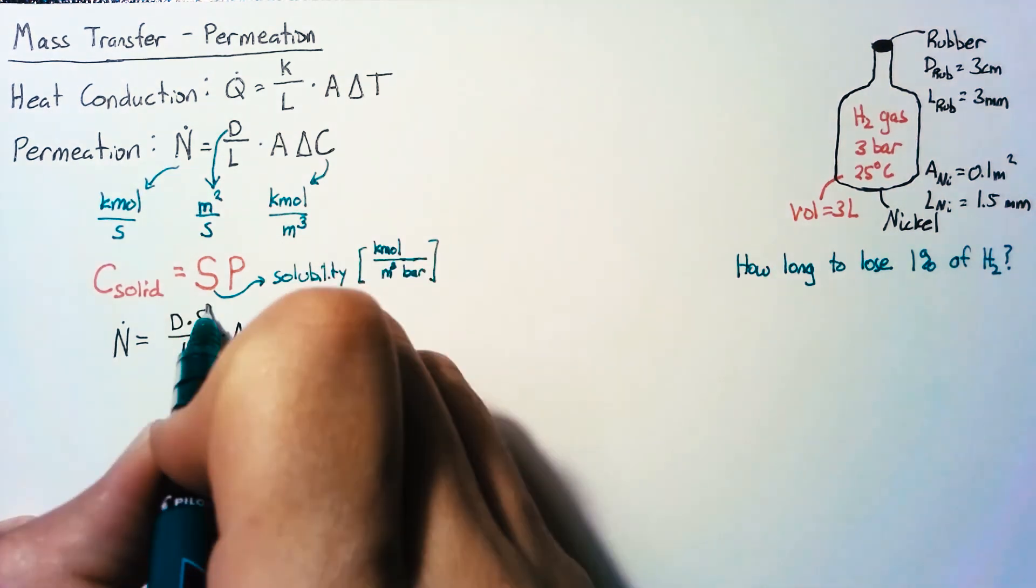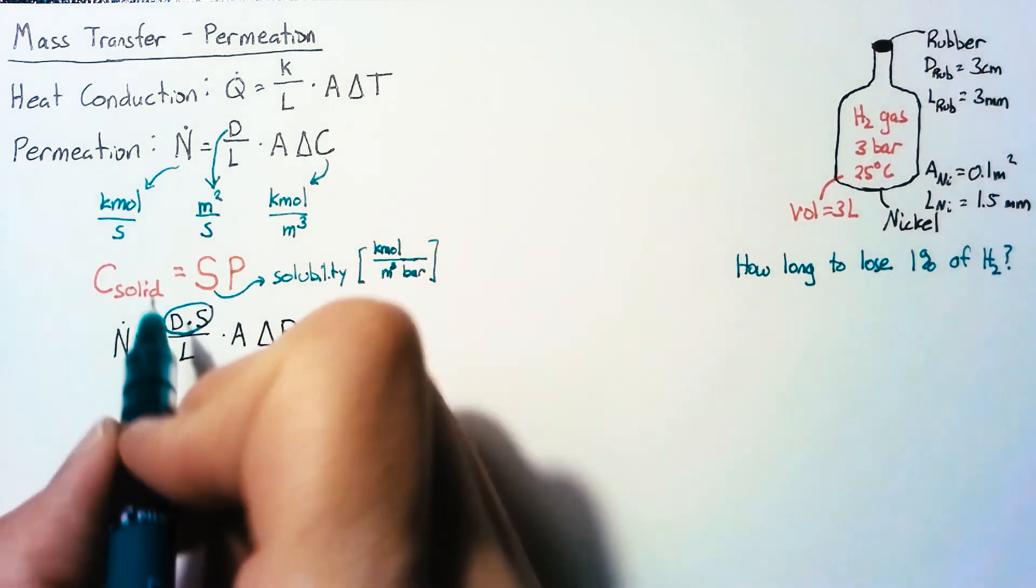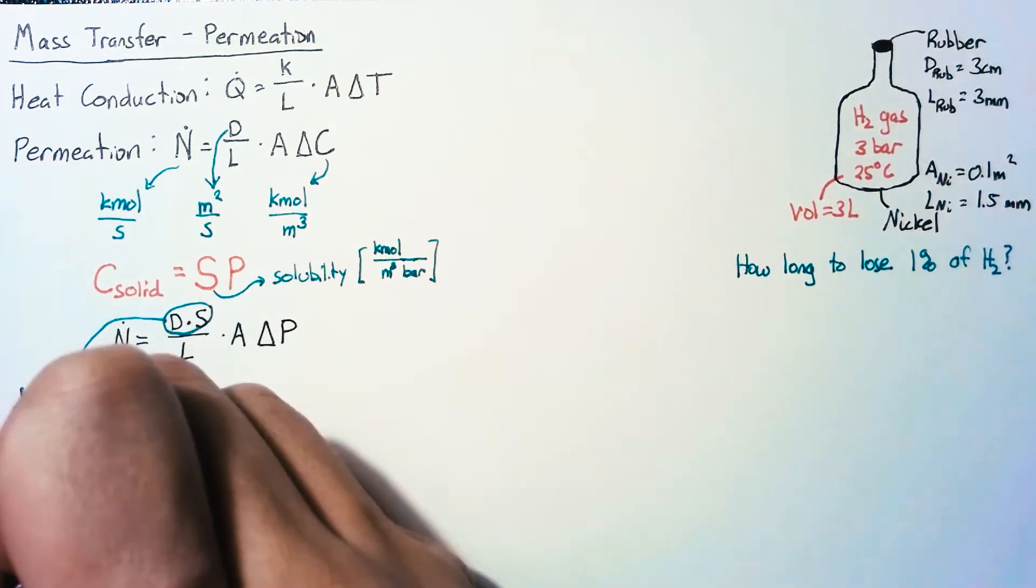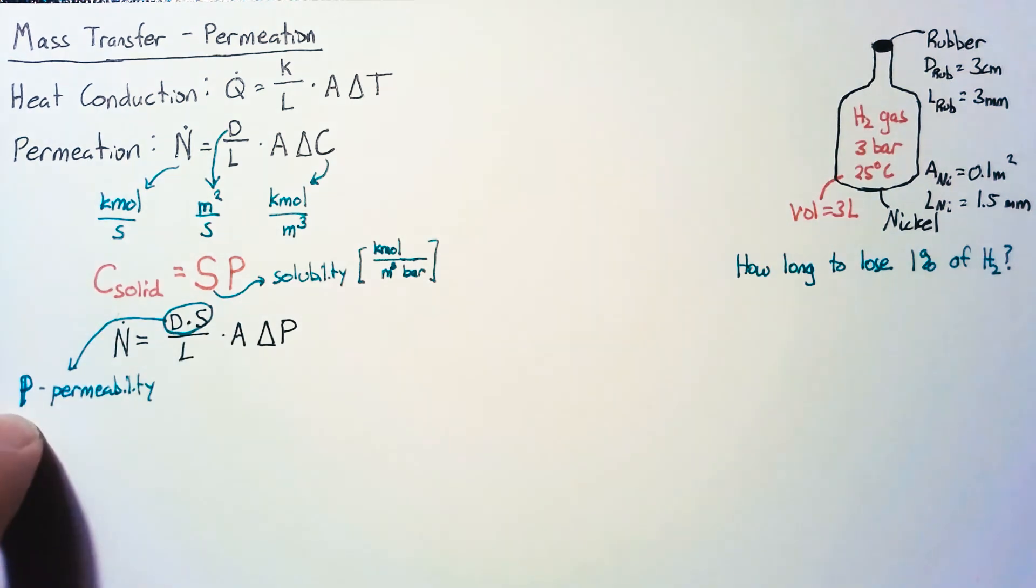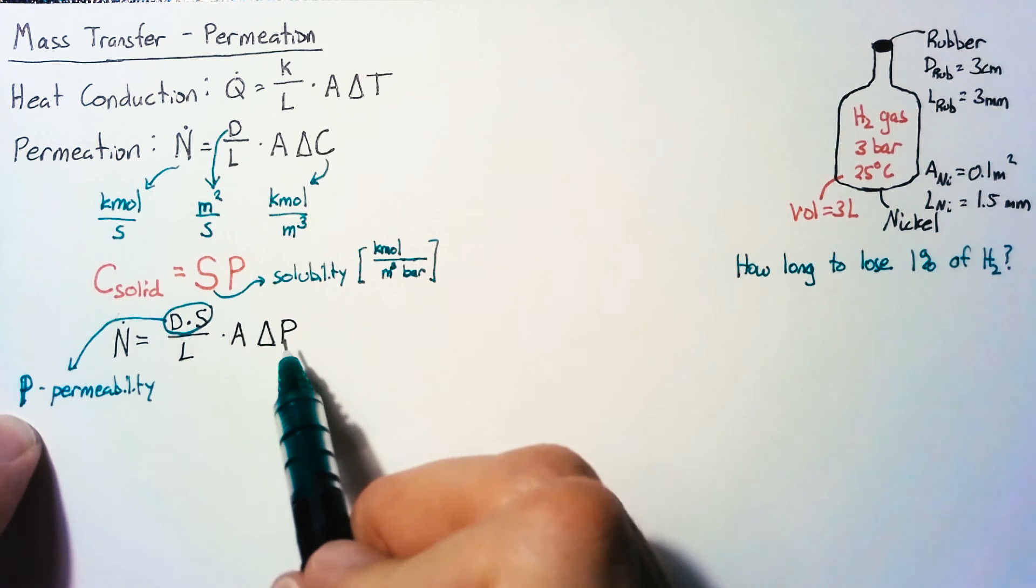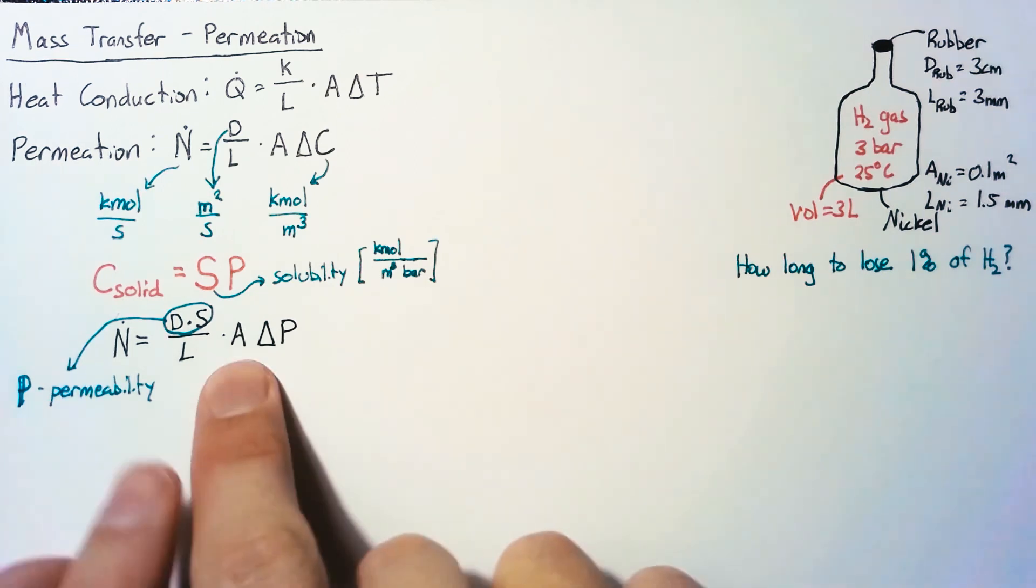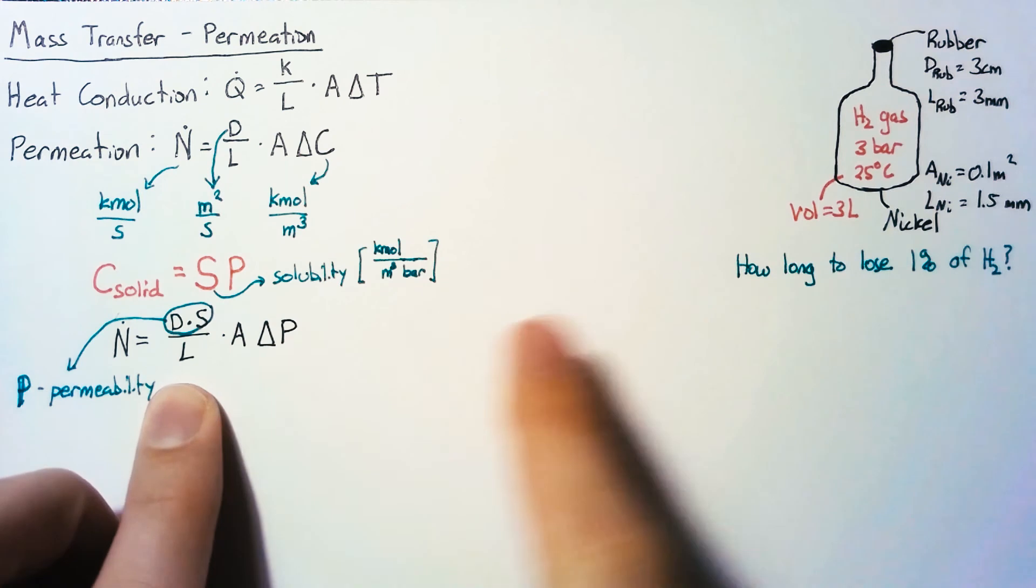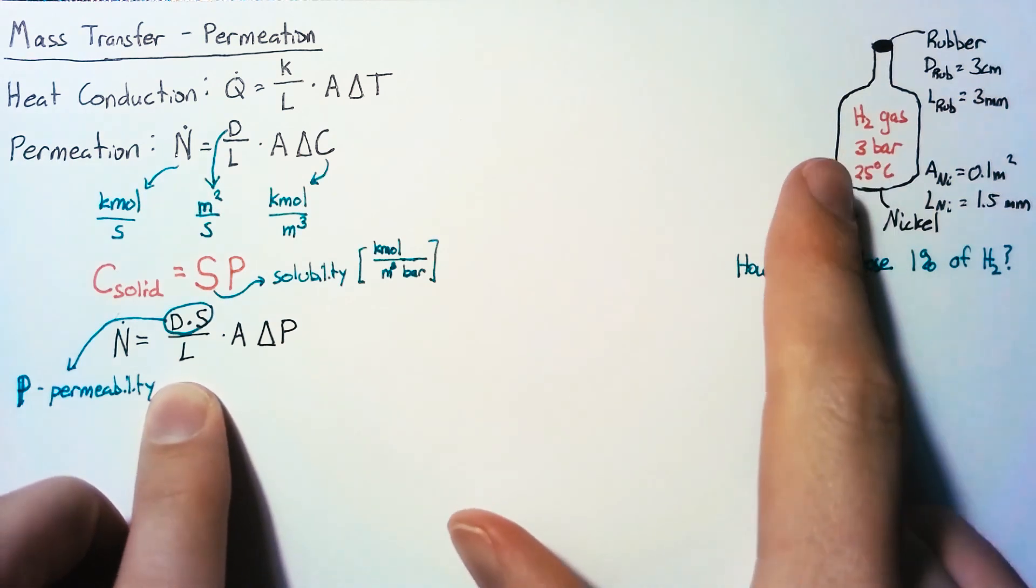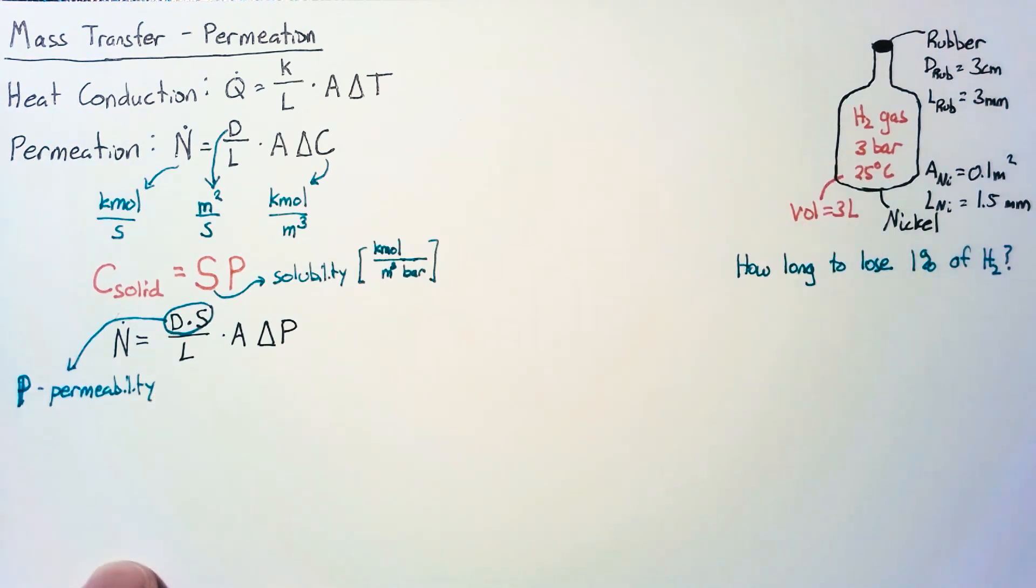Now this D times S is useful enough that we've given it a name: the permeability. We're using P for this, but I'll use a bold P to differentiate it from partial pressure. This equation will be most useful for finding the amount of gas leaving through our two solid surfaces.